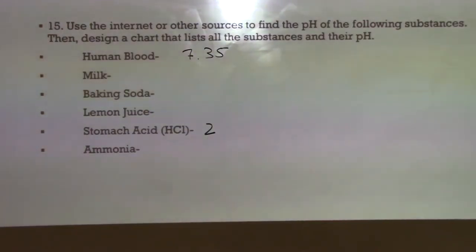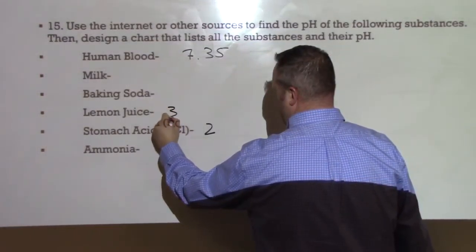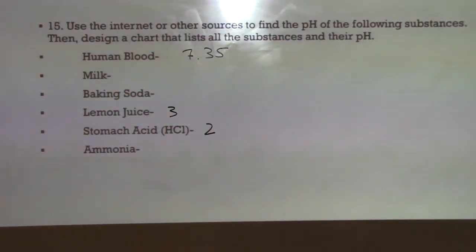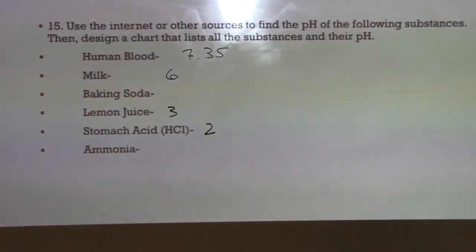Alright, so stomach acid is going to have a pH of around 2. Human blood is about a 7.35, although it can fluctuate slightly with different people. Lemon juice can also have a pH of around 2, but I think it's probably closer to about 3, depending upon its intensity and strength.